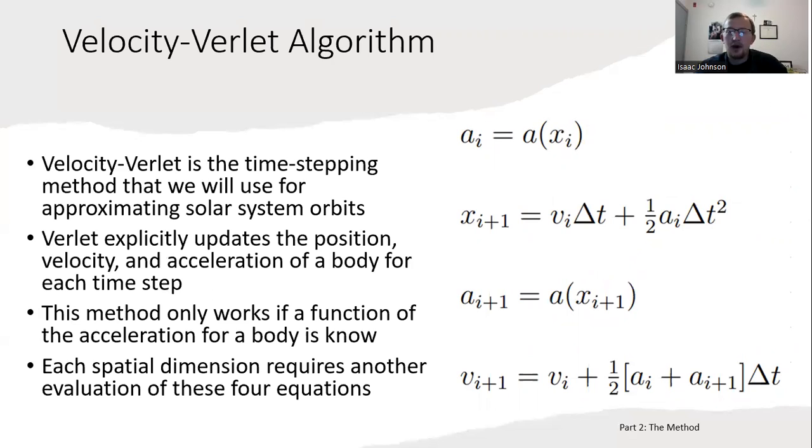The specific algorithm we just discussed was called Euler's method. It's the simplest way to approximate differential equation solutions. But the method we're going to use for this project is called the velocity Verlet algorithm. It's a time stepping method. You see these four equations that will update three quantities: the position, the acceleration on the body, and the velocity. This method only works if a function of the acceleration for a body is known, and luckily we have exactly such an equation—Newton's universal law of gravitation.